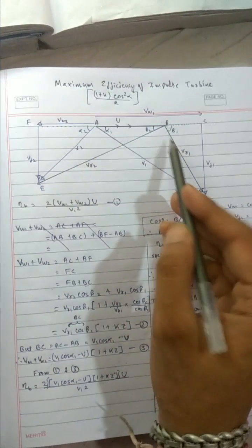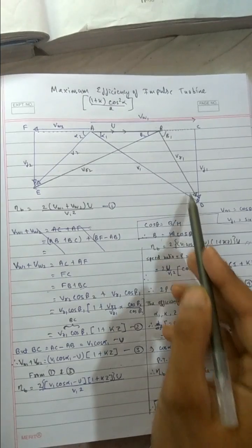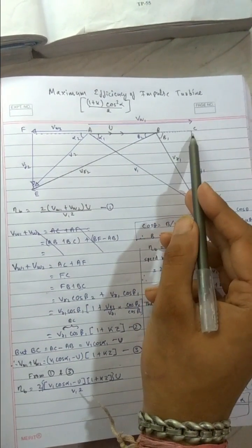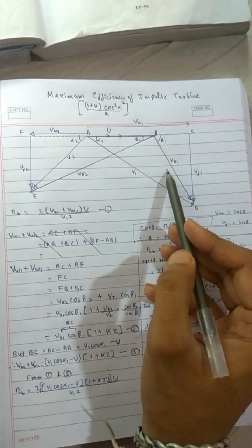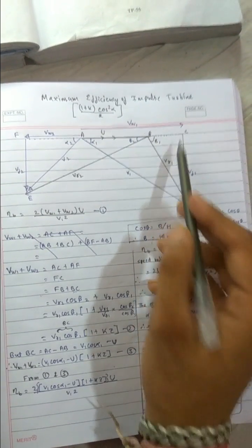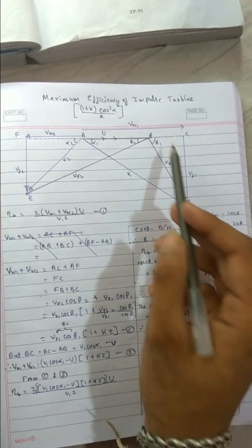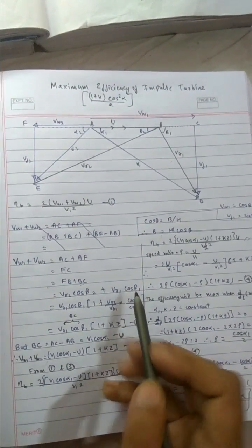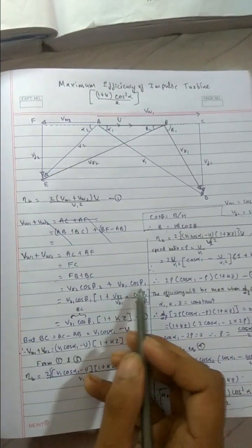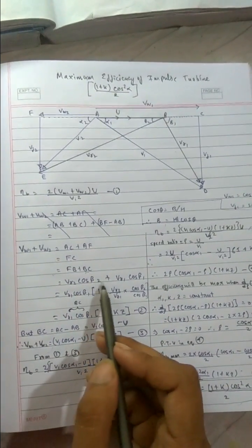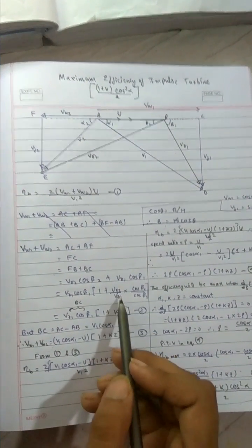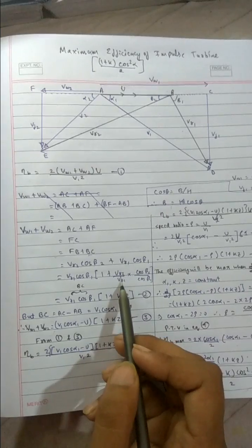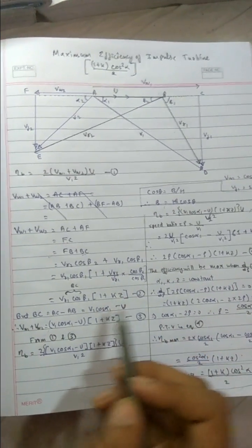Similarly for BC. This is the triangle. This is the base. Base equals to hypotenuse cos theta. BC equals to hypotenuse VR1 cos angle beta 1, so VR1 cos beta 1. Taking VR1 cos beta 1 common, therefore inside we have to divide this by VR1 cos beta 1, so we get 1 plus VR2 cos beta 2 by VR1 cos beta 1.